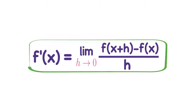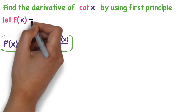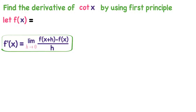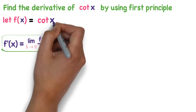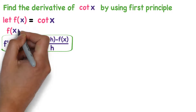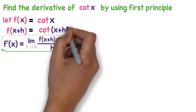Whichever function's derivative you want to find, you take that function as f of x. You want to find derivative of cot x, so f of x is cot x. For f of x plus h, just replace x with x plus h. So f of x plus h is cot of x plus h.